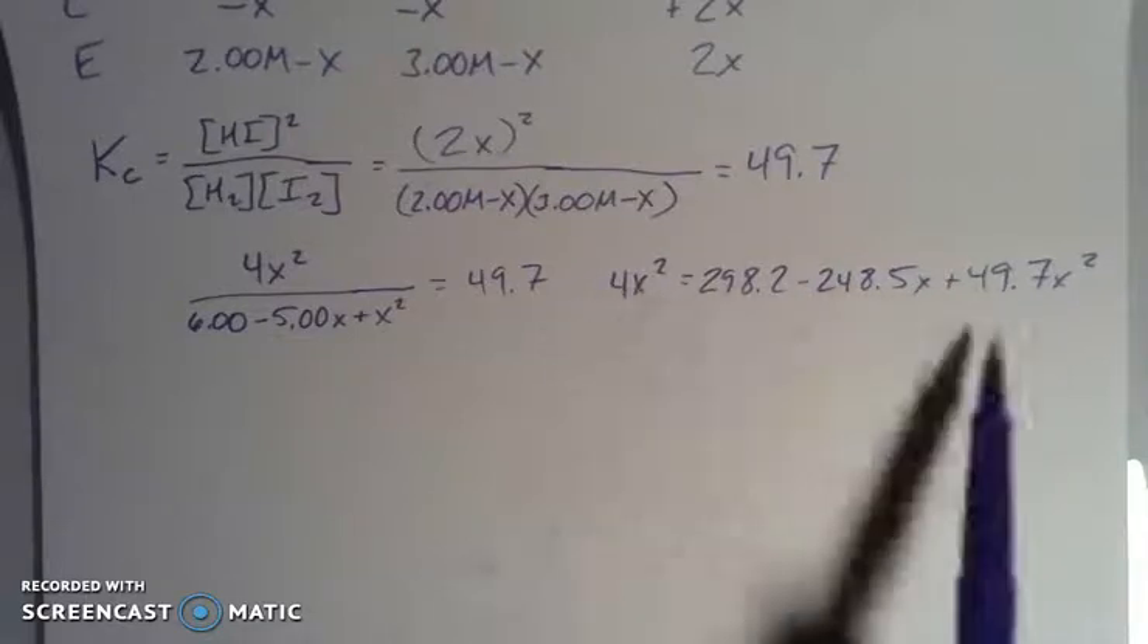Plus 49.7x squared. Okay, now because I'm going to have some x squared terms and an x term, then I know that I'm going to need to use the quadratic equation, and I told you that from the get-go. So in order to use the quadratic equation, I need to set up my equation here equal to zero. So I need to combine all my like terms, set the equation equal to zero, and then I can use those numbers in front of the different variables in order to plug them into the quadratic equation.